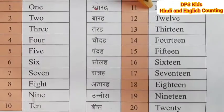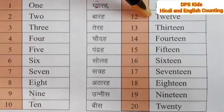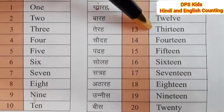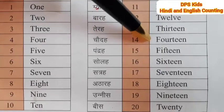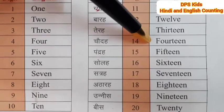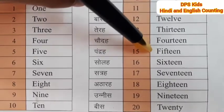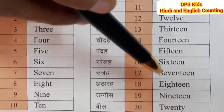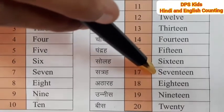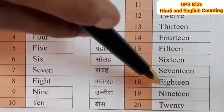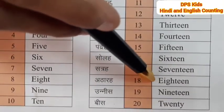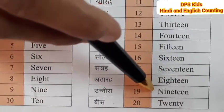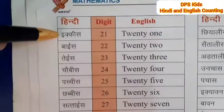Now let us read again: 11, 12, 13, 14, 15, 16, 17, 18, 19, 20.